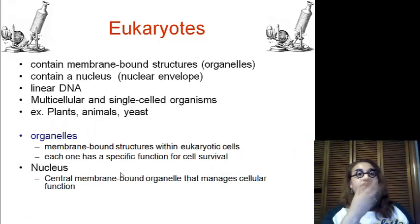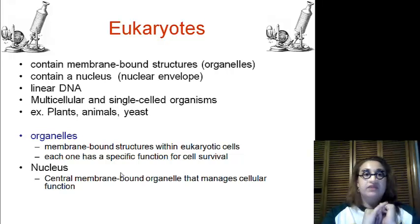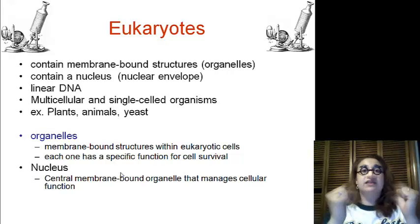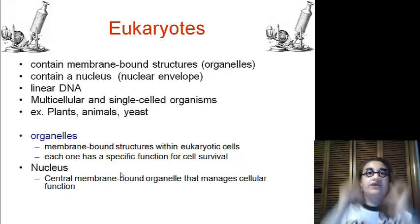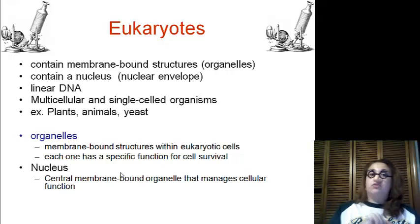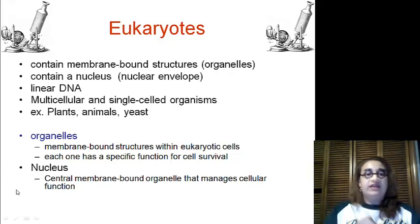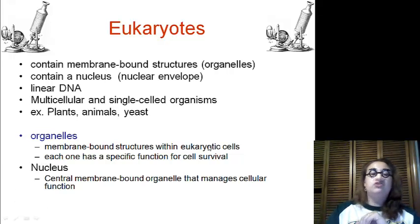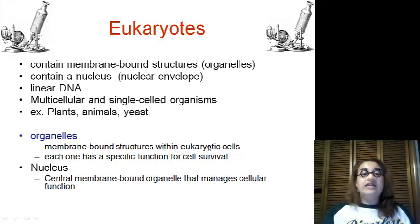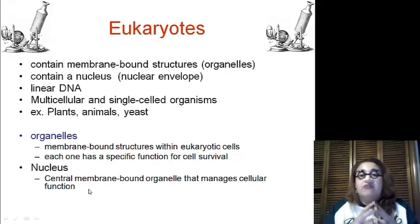Finally, we have eukaryotes, which contain membrane-bound structures called organelles. They contain a nucleus surrounded by a nuclear envelope. We have linear DNA. We are multicellular or single-cellular organisms. Examples are plants, animals, or yeast. Organelles are membrane-bound structures within eukaryotes, and each has a specific function for the cell's survival. The nucleus is the central membrane-bound organelle that manages all cellular functions.